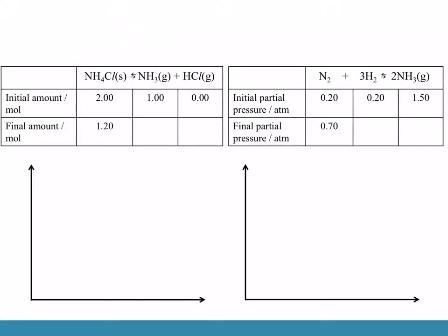Let's check your values. Separate the reactants from the products. From initial to equilibrium there is a decrease of 0.8 mol. Since it is a 1:1:1 ratio, the products will each increase by 0.8. So the values are 1.8 and 0.8.